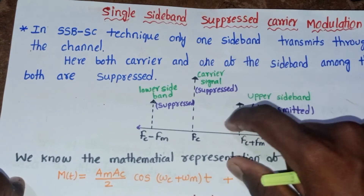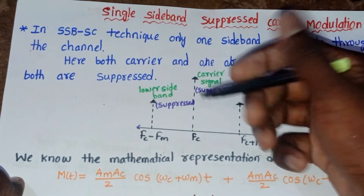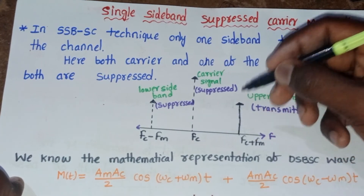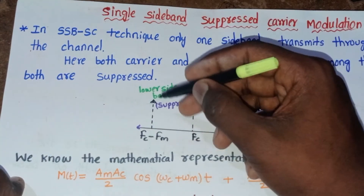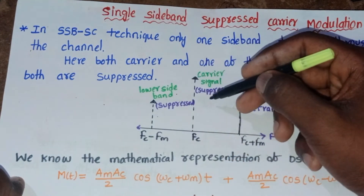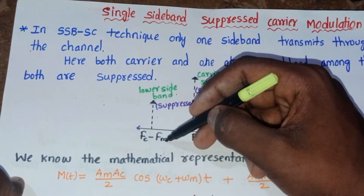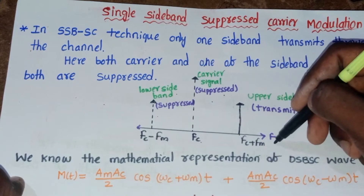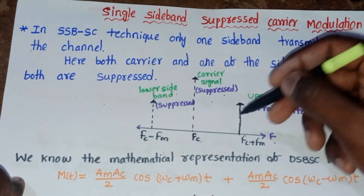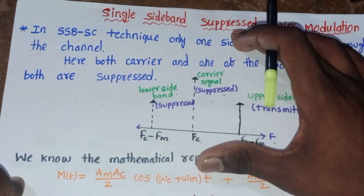Let's see the frequency domain representation of the SSB-SC modulated wave. A dotted line indicates suppressed components and a thick line indicates transmitted components. We observe the lower sideband at fc minus fm, the carrier at fc, and the upper sideband at fc plus fm. Here, both the carrier and lower sideband are suppressed, so only the upper sideband is transmitted, represented as a thick line.